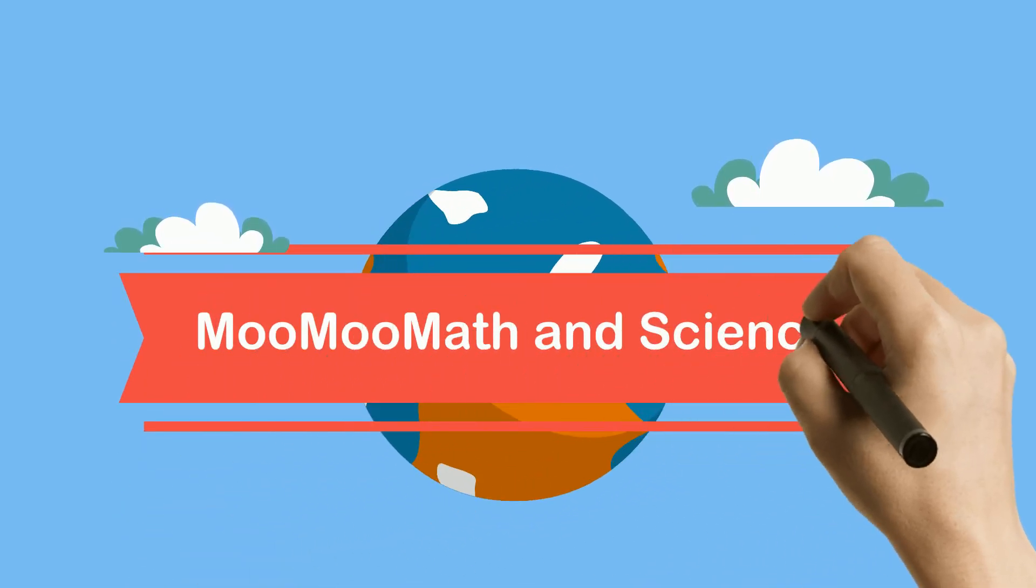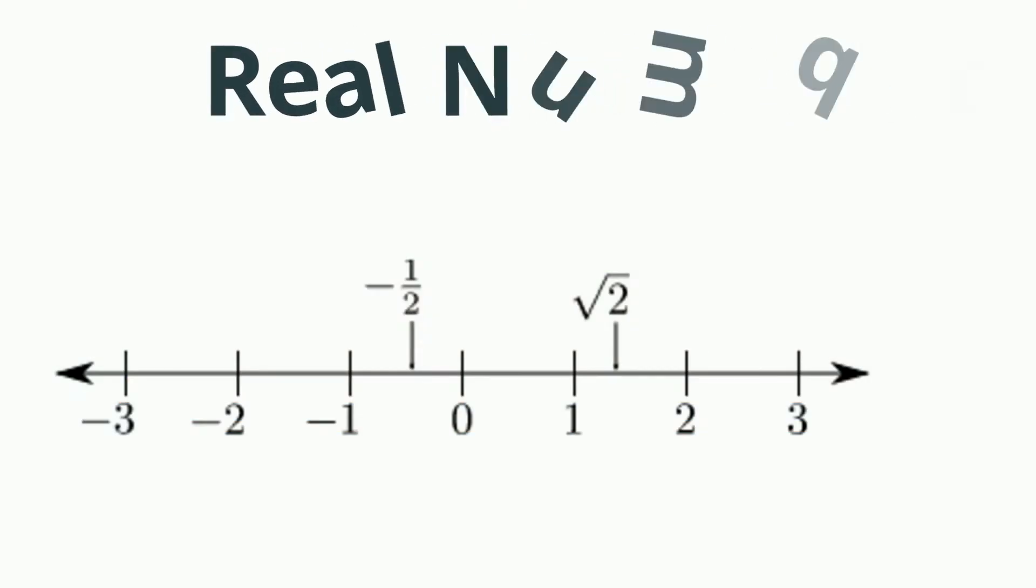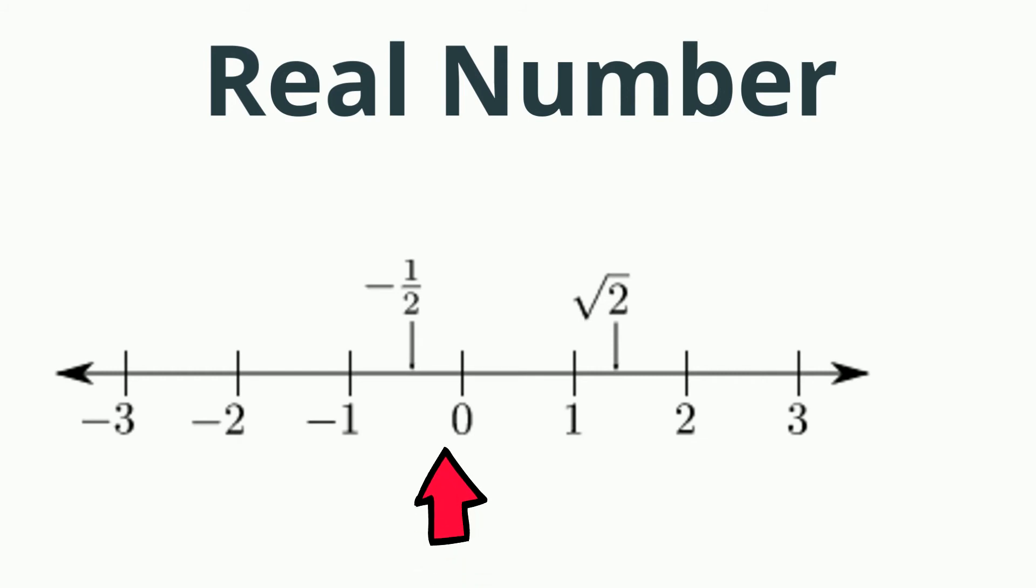Welcome to Moo Moo Math and Science and real numbers and sets of real numbers. A real number is a number that can be found on the number line. These are the numbers that we normally use in applying real-world applications.